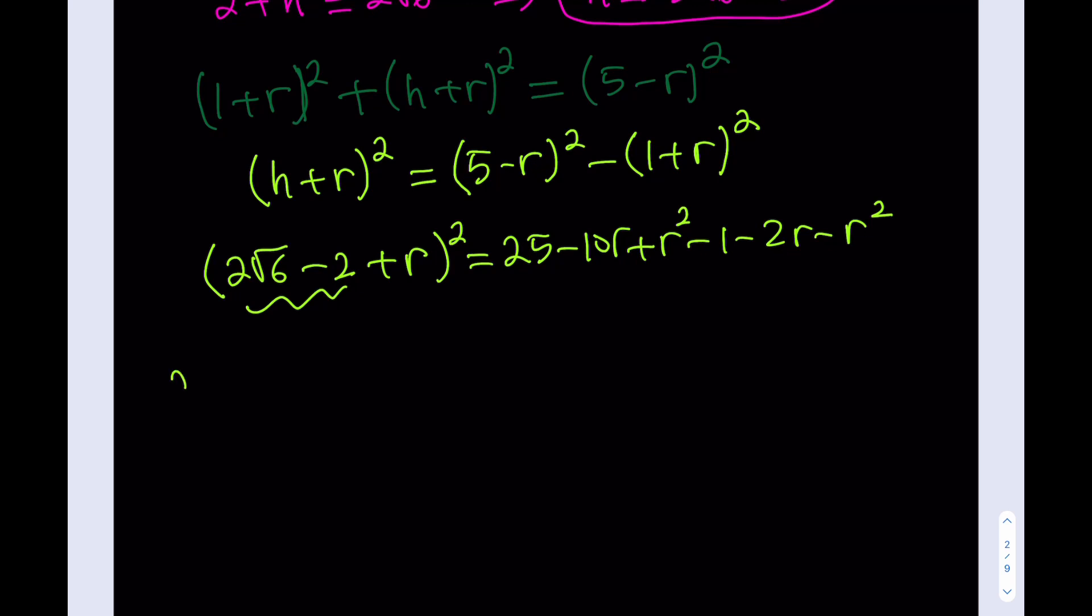Now let's go ahead and treat this as a single term and expand this. So this is going to look like (2√6 - 2)² plus I'm going to double this, so it's going to be (4√6 - 4)r + r². Beautiful. Now r² cancels out here, leaving us with 24 - 12r. Awesome.